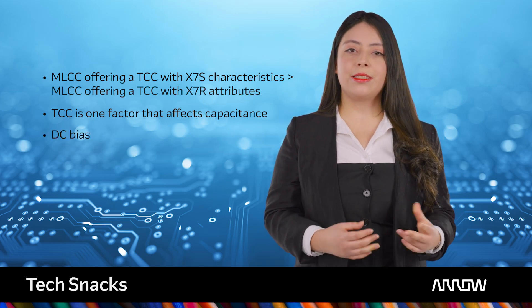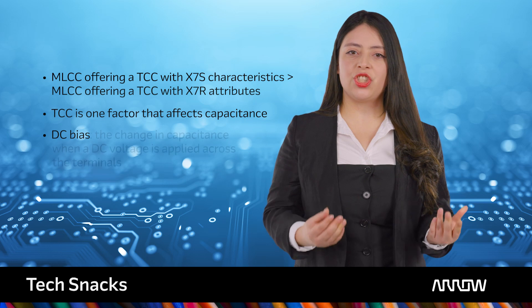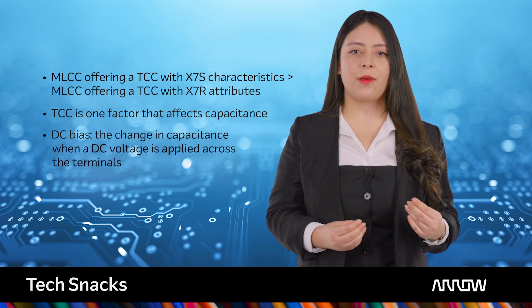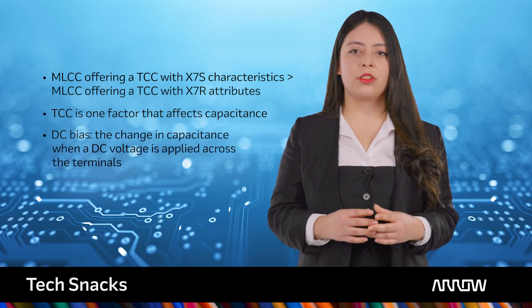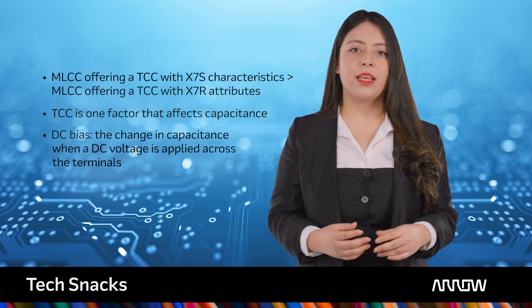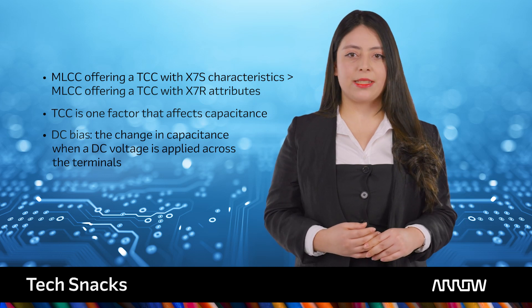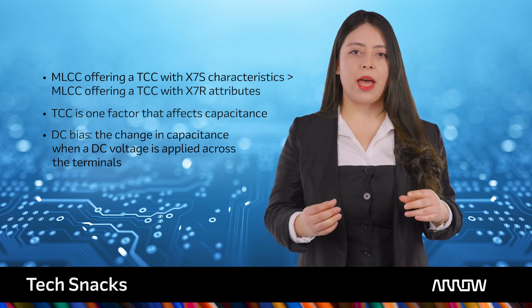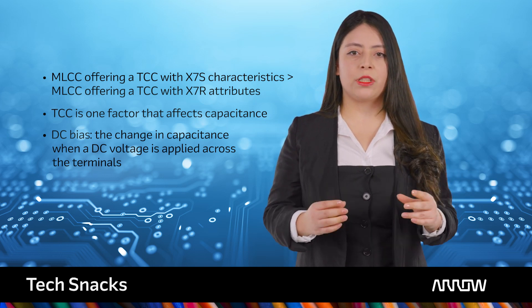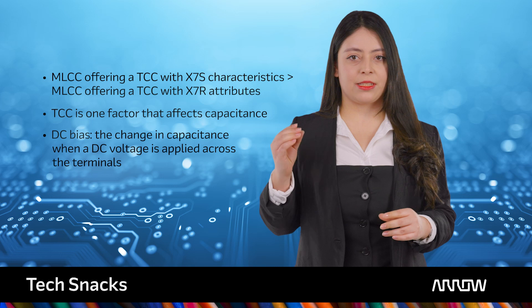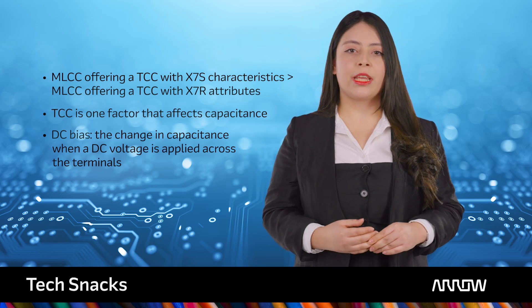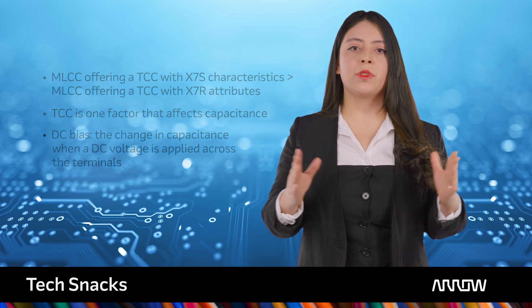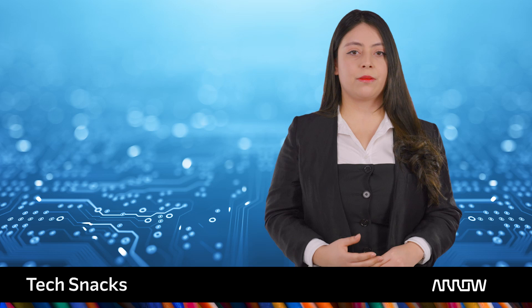DC bias is the change in capacitance when a DC voltage is applied across the terminals. The capacitance value will drop as DC voltage rises, which can negatively affect many types of circuits.